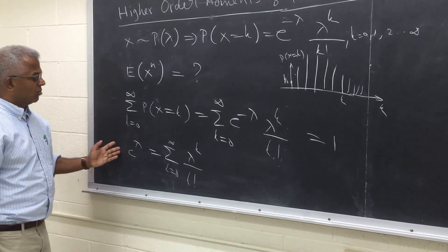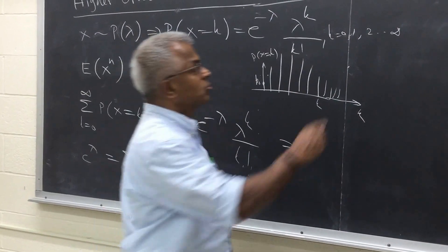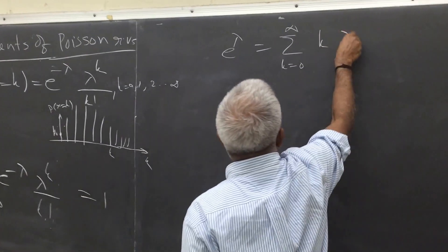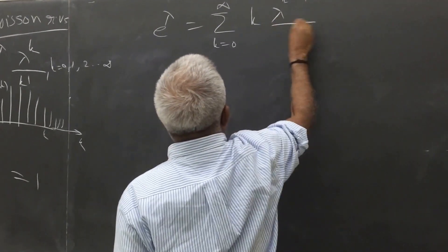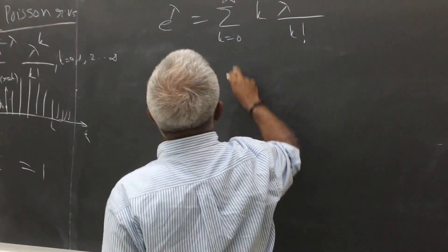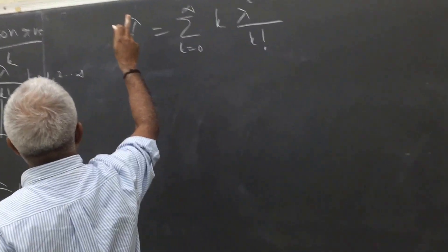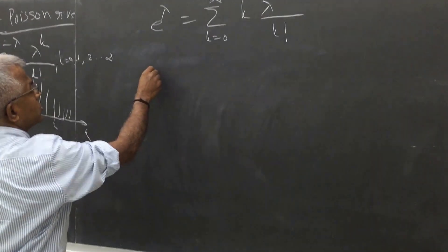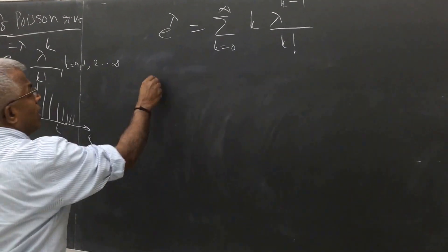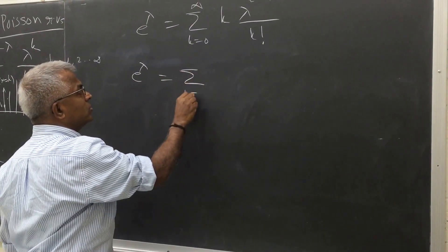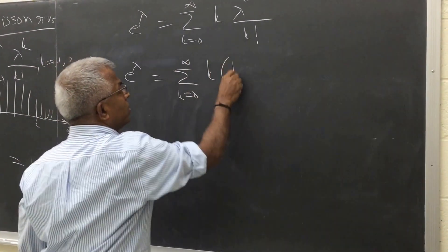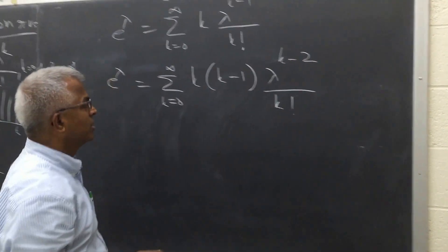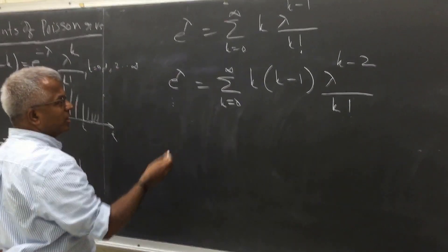I am going to take the derivative of this on both sides with respect to lambda. Taking the first derivative, we get the sum from k equal to 0 to infinity of k multiplied by lambda to the power k minus 1 over k factorial. Taking the derivative one more time gives us the sum of k multiplied by k minus 1, lambda to the power k minus 2 over k factorial.